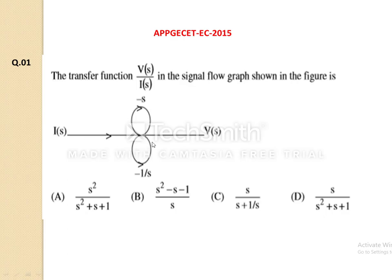Before applying Mason's gain formula, first we need to identify the number of forward paths in the given SFG. A forward path is one where the signal starts from the input node and reaches the output node without repeating any other nodes. The given SFG has only one forward path, which starts from I(s) and reaches V(s) without repeating any nodes. The upper and lower paths are not considered forward paths because there is a repetition of nodes — the loop starts from the same junction and ends at the same junction.